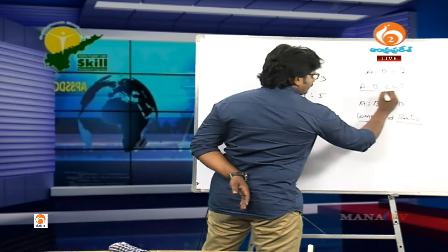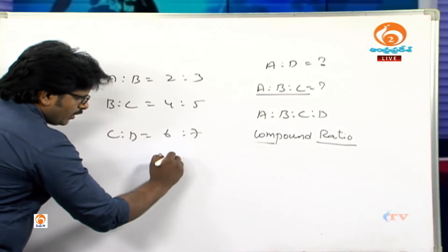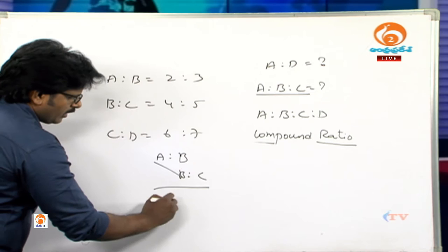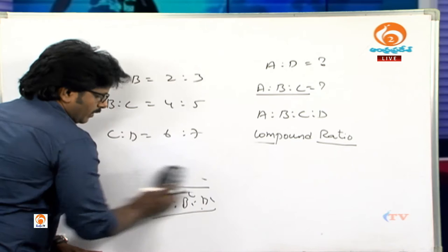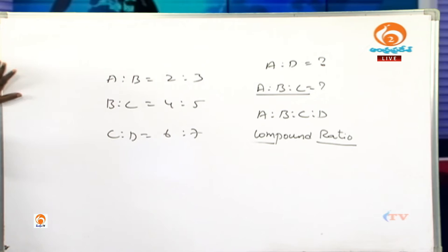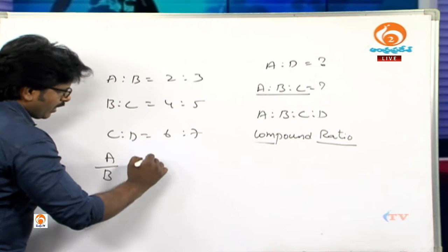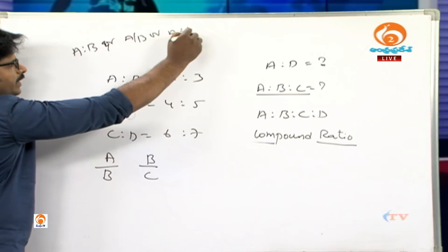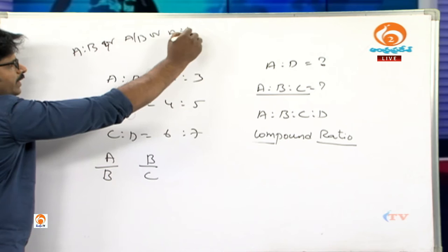To find A is to B is to C: we can write A is to B as A/B and B is to C as B/C. In the fractions A/B and B/C, A lies only in the numerator, B appears in both denominator and numerator, and C lies only in the denominator.